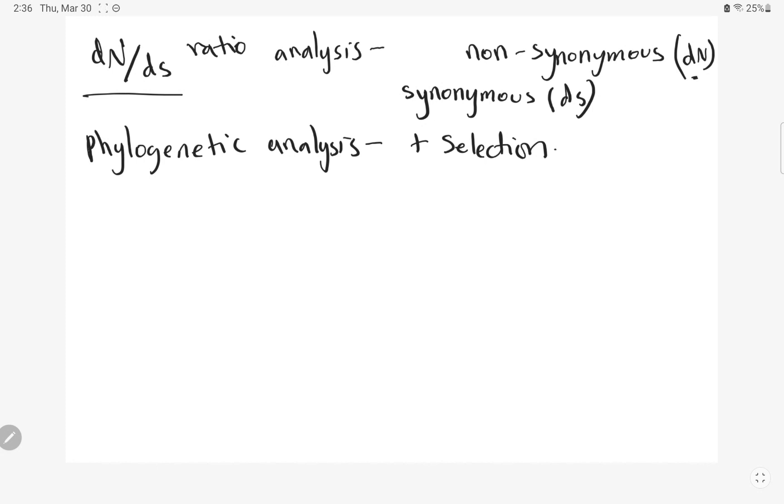The next one is codon-based methods. Codon-based methods such as maximum likelihood and Bayesian methods use statistical models to identify positive selection at a molecular level. These methods can detect positive selection acting on individual codons in a gene.